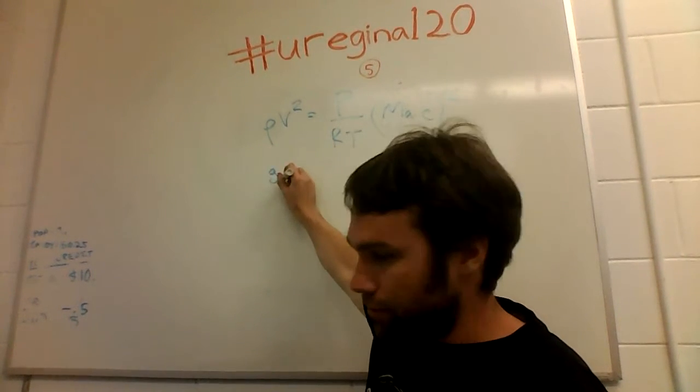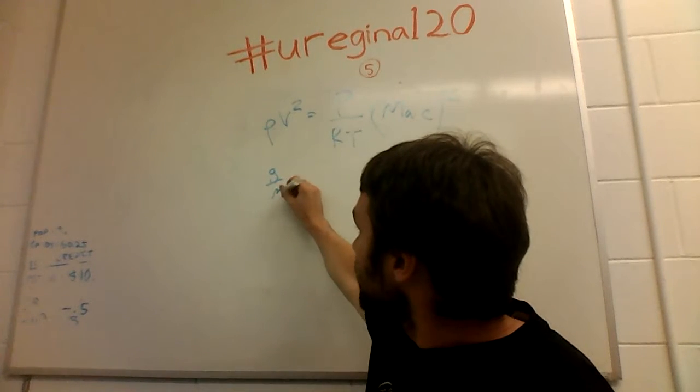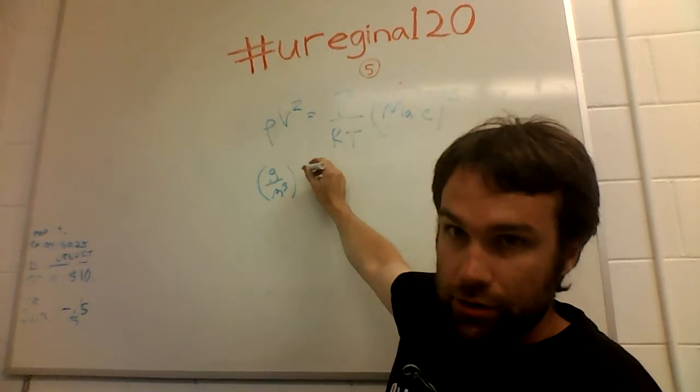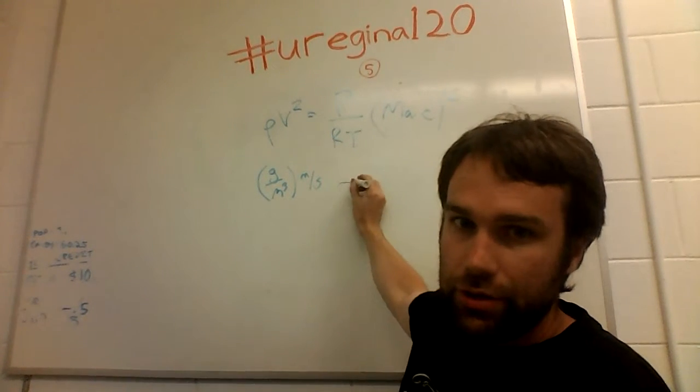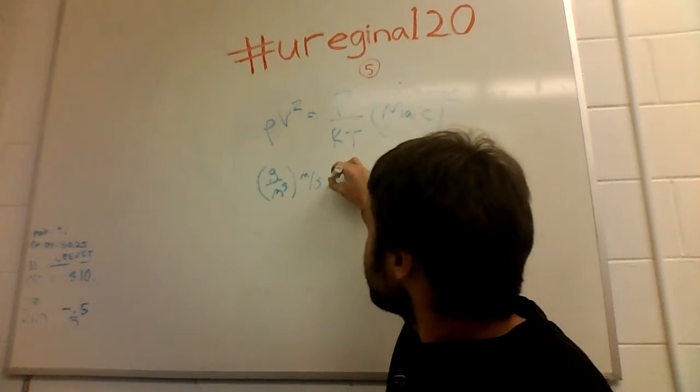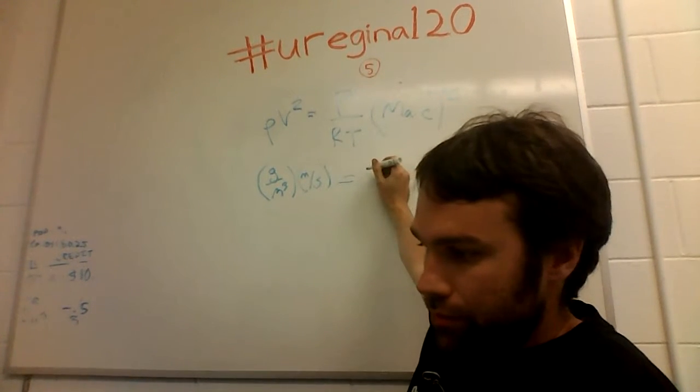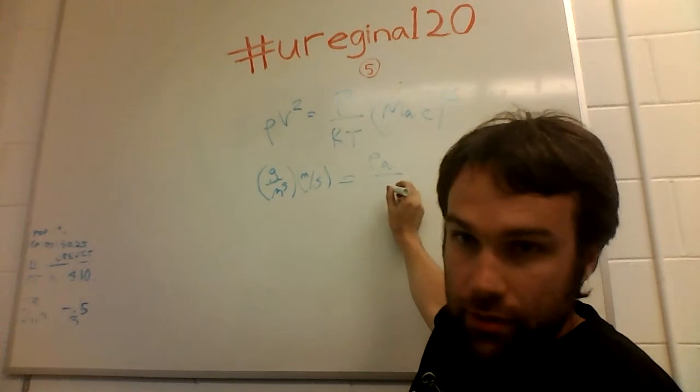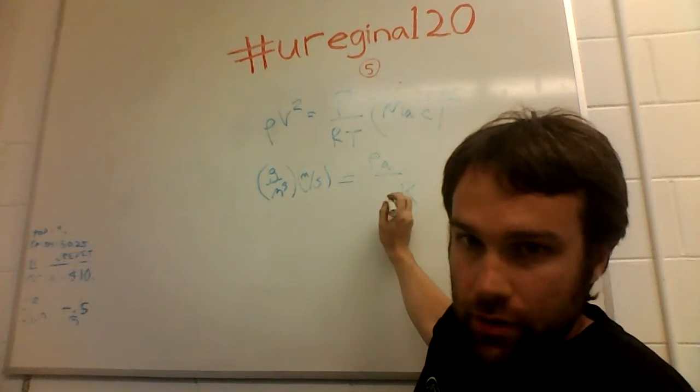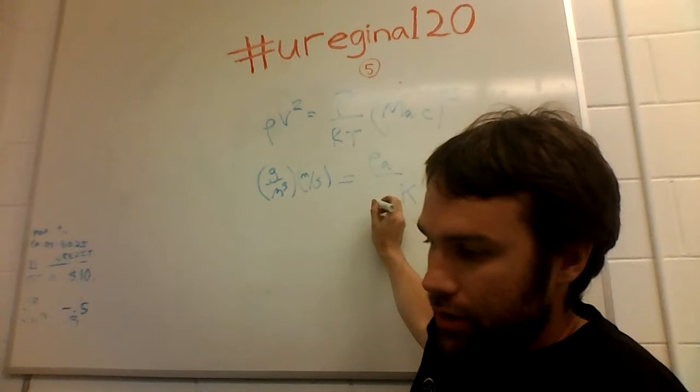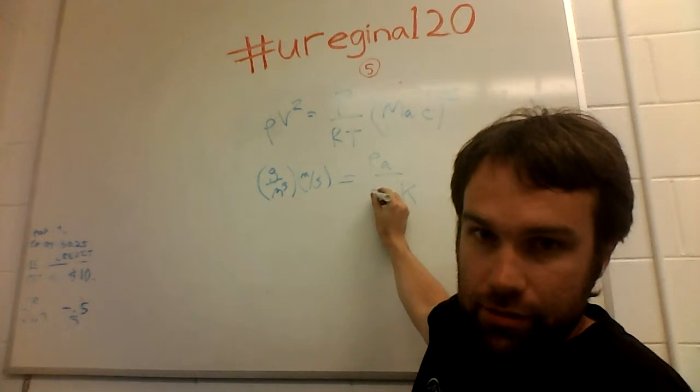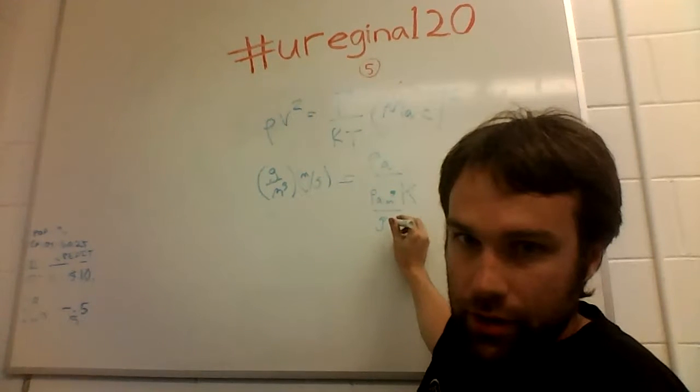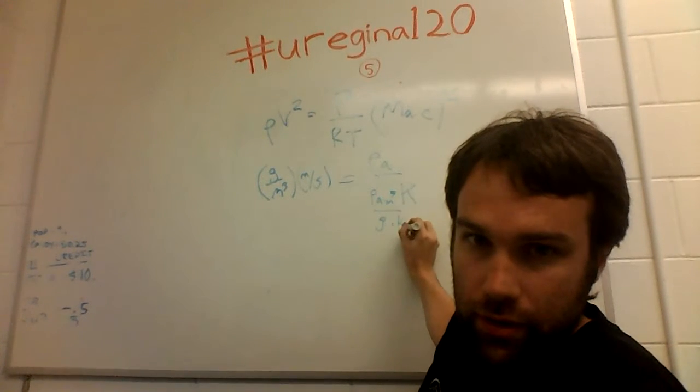Rho is grams or kilograms over meter cubed. This V is just meters a second I think. It turns out to not actually matter all that much. Pressure is in pascals. Temperature of course is in kelvin. R is a little bit complicated. It's pascals times meters cubed over grams or kilograms kelvin.